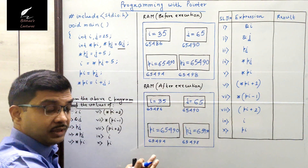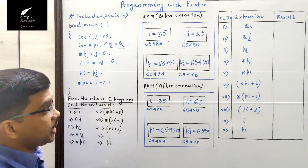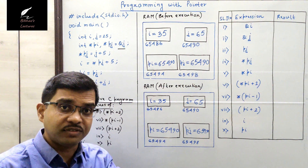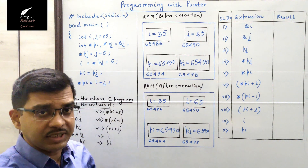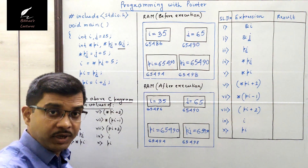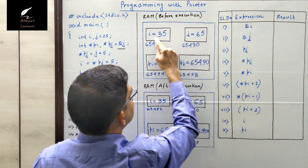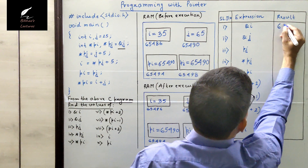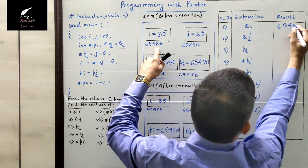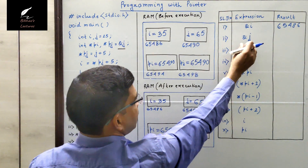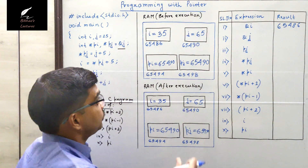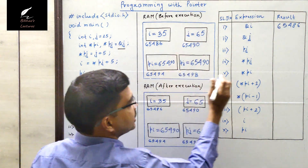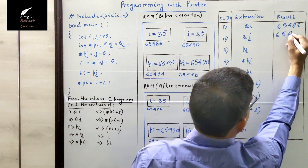What is ampersand i? Ampersand means 'address of' operator. So ampersand i means the address of variable i, which is 65486. Next, ampersand j means address of j. j's address is 65490, so ampersand j is 65490.